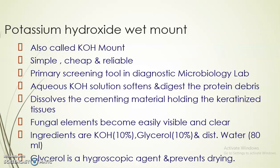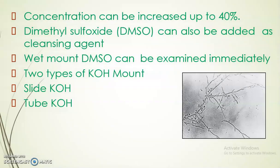KOH helps to soften and digest the protein debris present in the specimens and helps to dissolve the cementing materials holding the keratinized tissues, so we can see the fungal elements more clearly. Ingredients are: KOH 10%, glycerol 10%, and distilled water 80 ml. Glycerol is added as a hygroscopic agent to prevent drying. The concentration of KOH can be increased up to 40% depending on use, and dimethyl sulfoxide (DMSO) can also be used as a cleansing agent; DMSO wet mounts can be examined immediately after preparation.